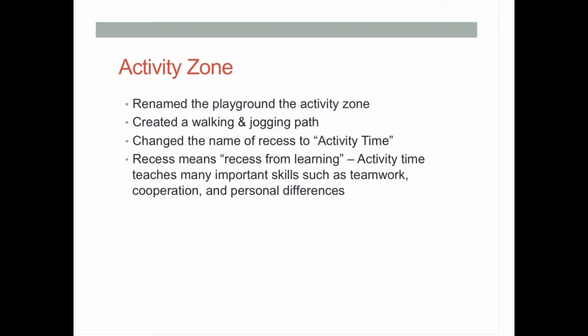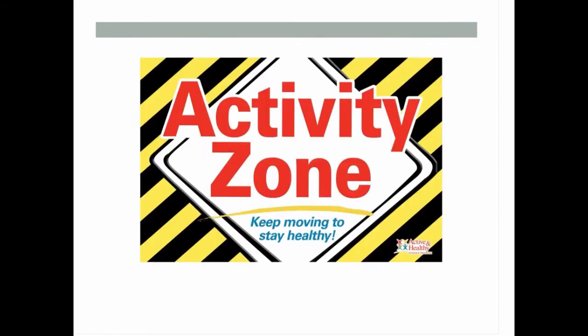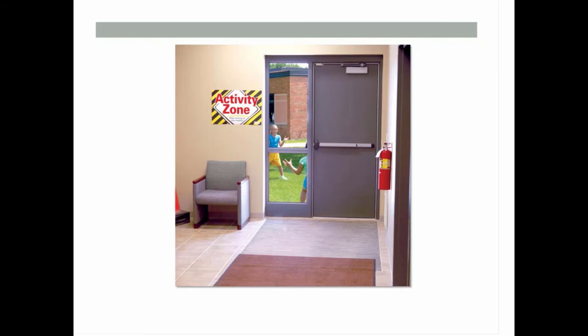Another thing that can be done is renaming the playground as the activity zone — it just sends a different message. Having a walking and jogging path. Recess is activity time — just sending that message that we're going out to be active. I would argue it's not necessarily a recess from learning; they're learning things. But we have to send the message: we're going out to be active. I've worked with a school that has a sign right by the door — similar to the Notre Dame sign players hit when going out — and all students hit it on their way out to the activity zone. Just getting them jazzed up about being physically active.